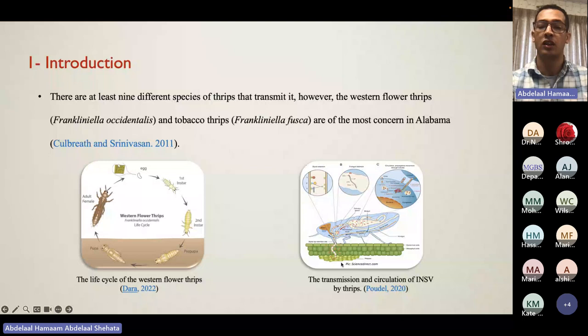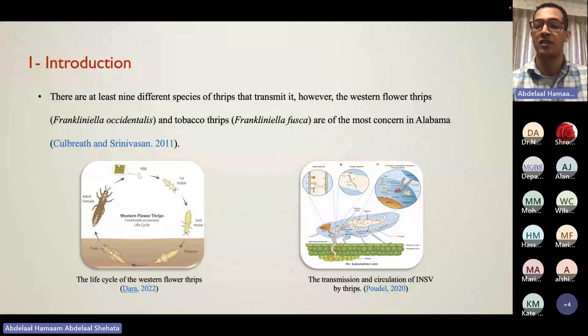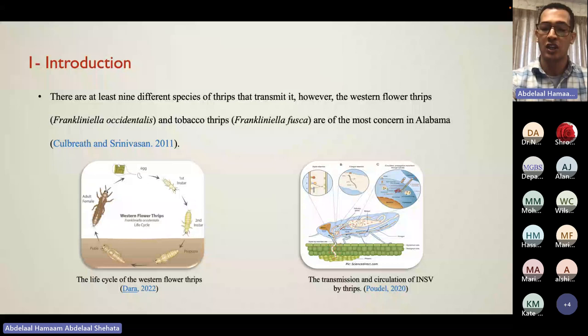The larva feeds on infected plants and takes up the virus by sucking sap. The virus then binds with the insect gut using the glycoproteins mentioned earlier, and travels through the foregut and midgut, circulating throughout the whole insect system. That is why this virus is transmitted in a persistive, propagative manner — meaning the virus can multiply and circulate throughout the entire insect before being transmitted to healthy plants via saliva.